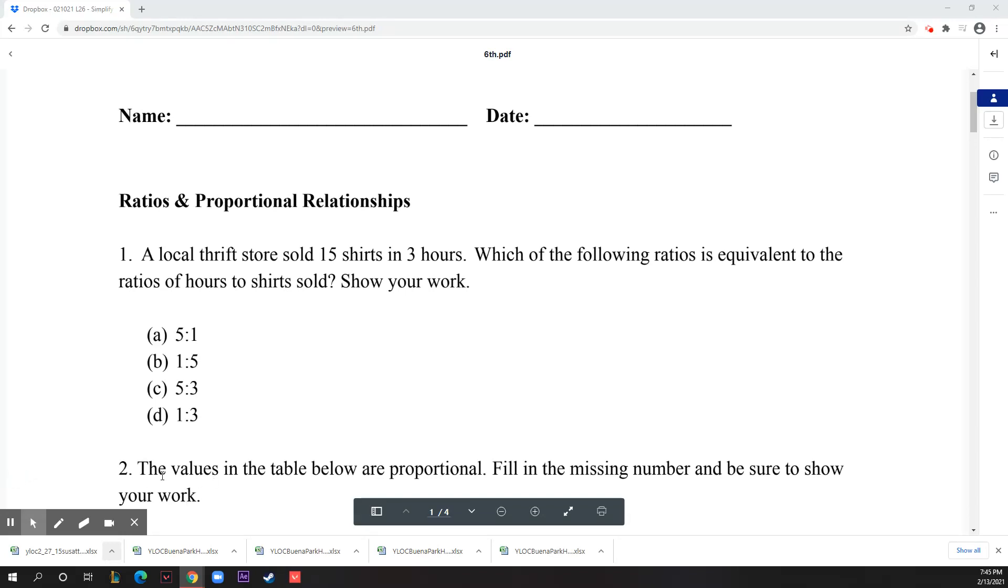Hello everybody, so today we're going to be starting off with ratios and proportional relationships. Number one: a local thrift store sold 15 shirts in three hours. Which of the following ratios is equivalent to the ratio of hours to shirts sold? Show your work. First of all, you need to know what ratio they're asking for. They're asking for hours to shirts, so hours would be three hours.